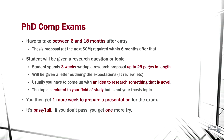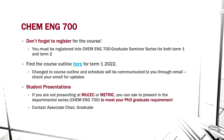Don't forget to register for ChemEng 700 seminar — you need to register for both term one and term two, but not the summer term. I've already shared the course outline, schedule, and assessment method by email, and I'll include a link in the slides. For PhD students, you're required to present at least once at our MuCheck or Metric Conference to graduate. If you can't do that, you can also present at our department seminar series — talk to me and I'll add you to the schedule.